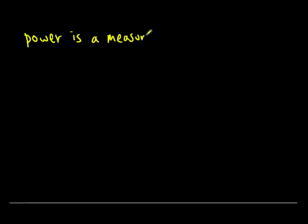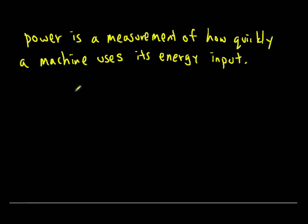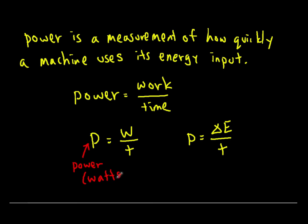Power is a measurement of how quickly a machine uses its energy input. The formula we use for power is power equals work divided by time. P equals W over T or it could also be written as P equals delta E over T. In each of these formulas, they mean the same thing. P is power which is measured with the unit watts or W. Don't mix up the W of watts with the W of work. Work is measured in joules. T is time which is measured in seconds.